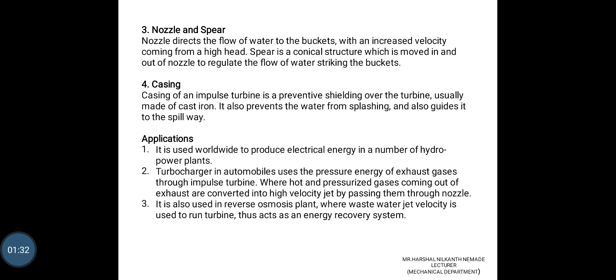Casing: The casing of the impulse turbine is a protective shield for the turbine, usually made of cast iron. It also prevents the water from splashing and guides it to spill away.